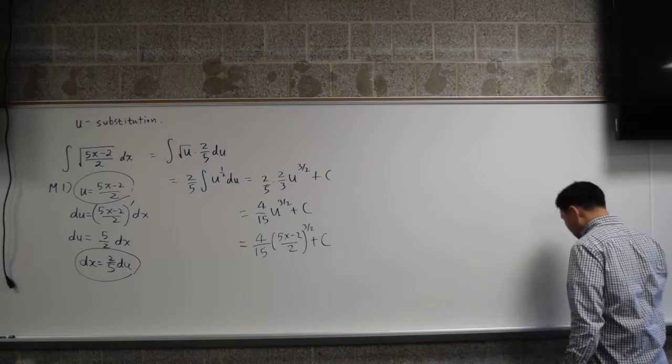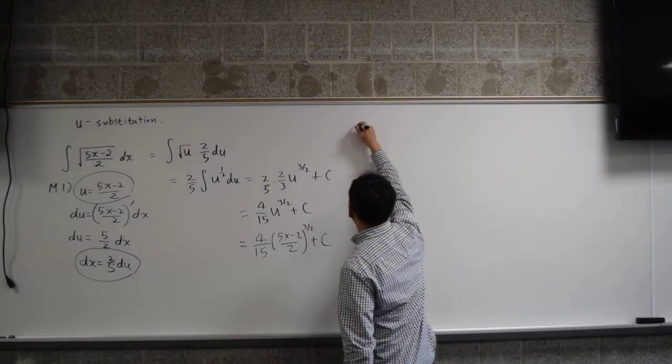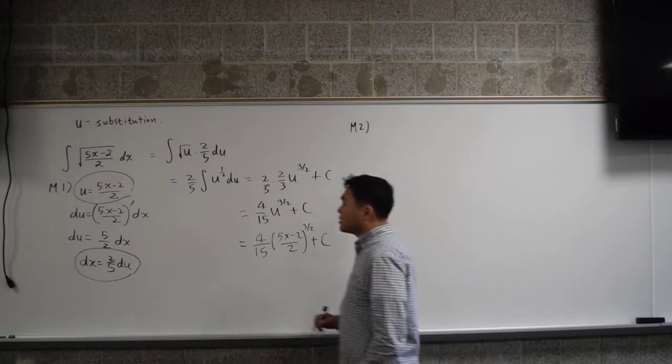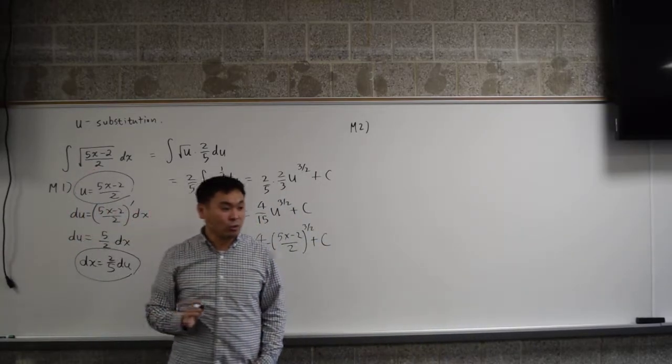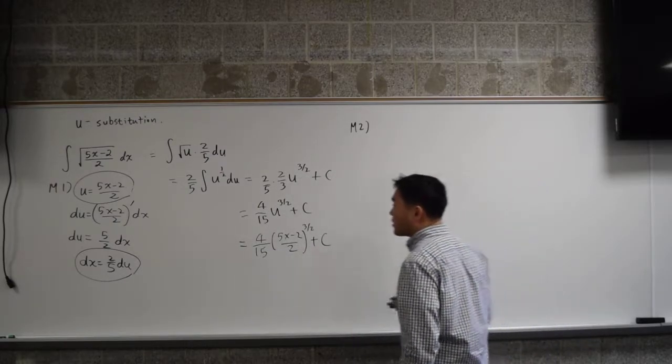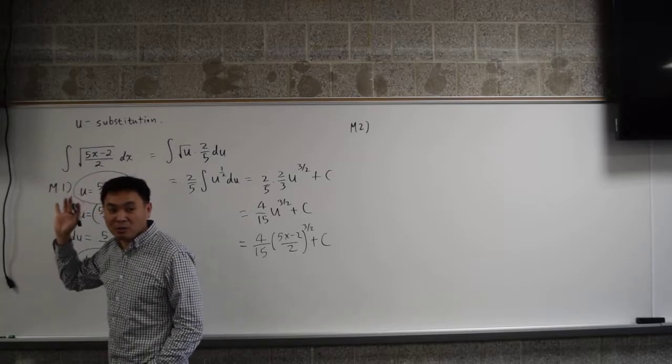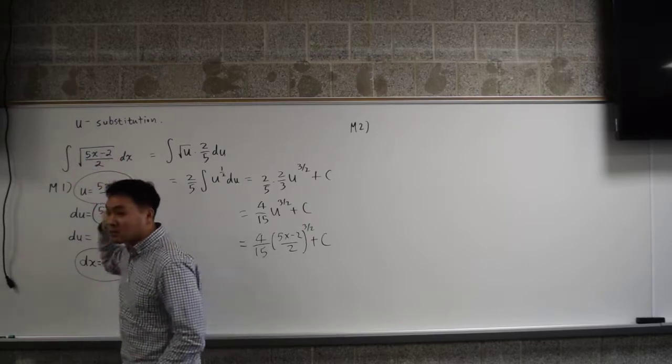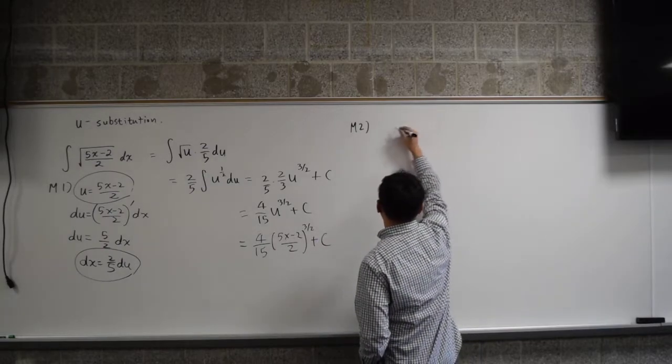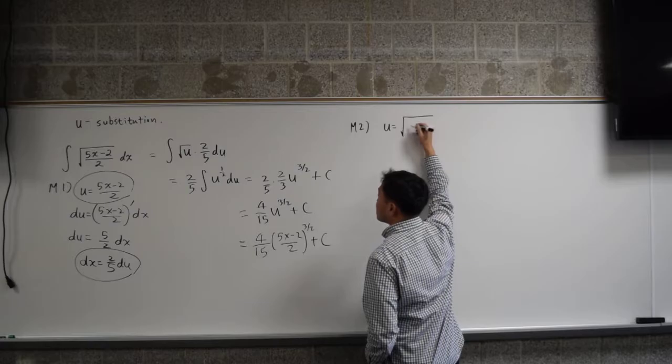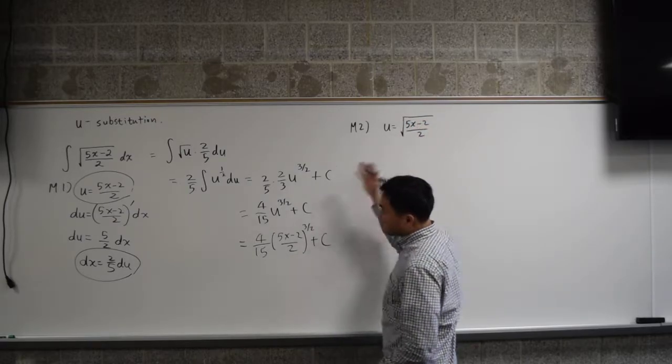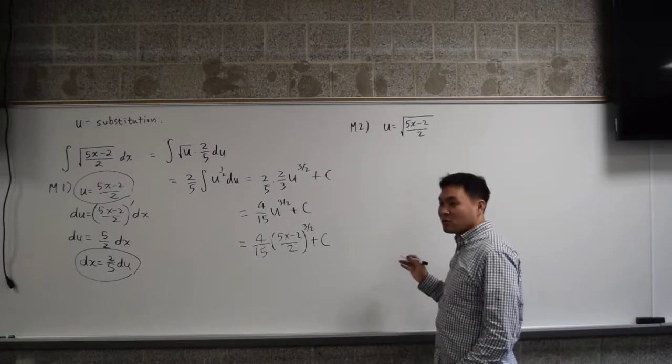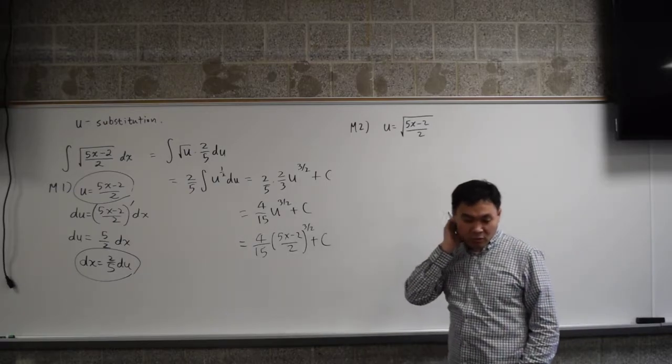I want you to see the second method, because often what happens is that when you see a square root, things get easier if you take the entire square root as u. Especially if the thing inside is just x. If there's x squared, then probably that's not a good idea. It could fail, but it may or may not work. But especially when you have x, you'll see that taking u as the entire thing is sometimes helpful. For this method, it may not be that much better. But there are cases—I'm going to show you another example later, which is a lot better if you do it this way. So you take the entire thing as u.